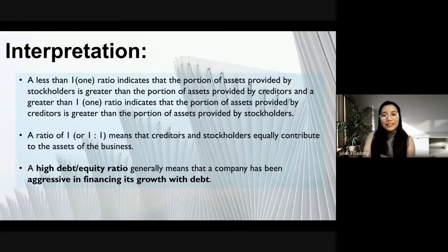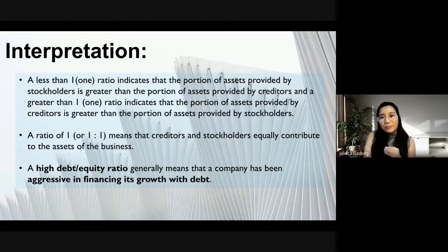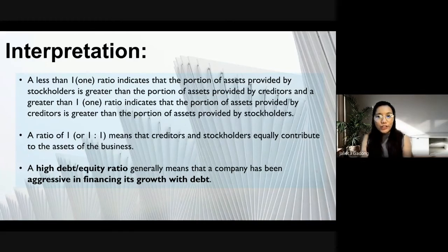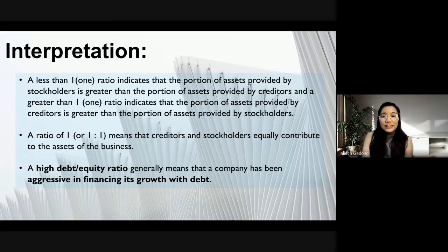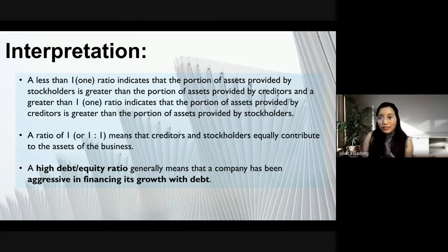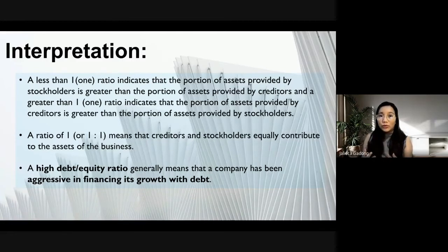A ratio less than one tells us that the portion of assets provided by the owners is greater than the portion provided by the creditors. A ratio greater than one tells us that the creditors provide a greater portion of assets than the owners or stockholders. A ratio of exactly one means creditors and stockholders contribute equally to the assets of the company. A high debt-to-equity ratio indicates a company has been very aggressive in financing its growth with debt.